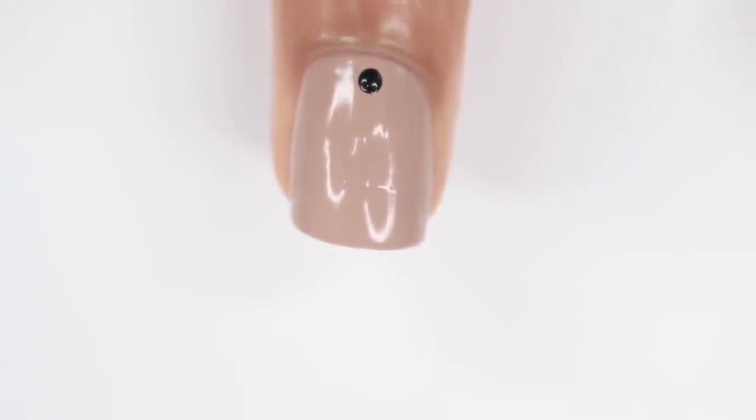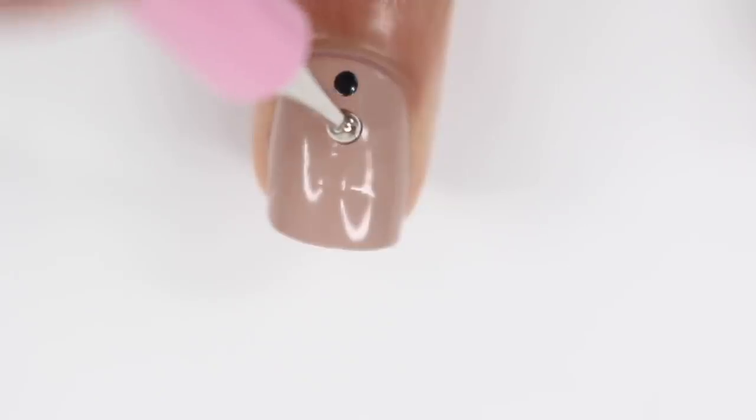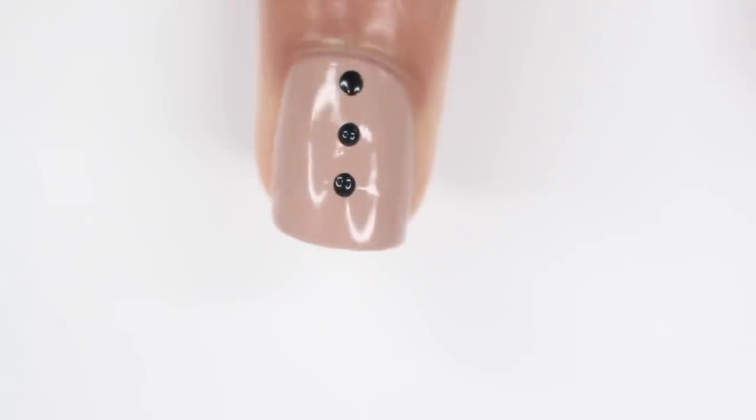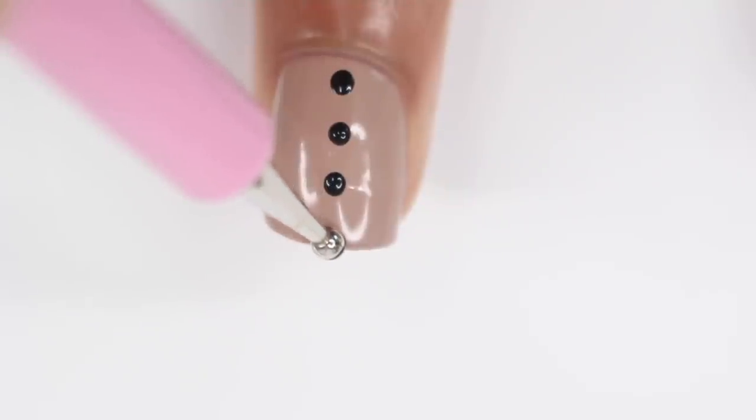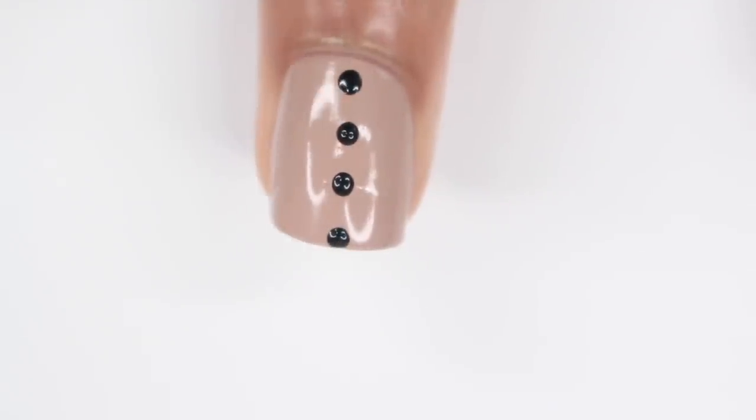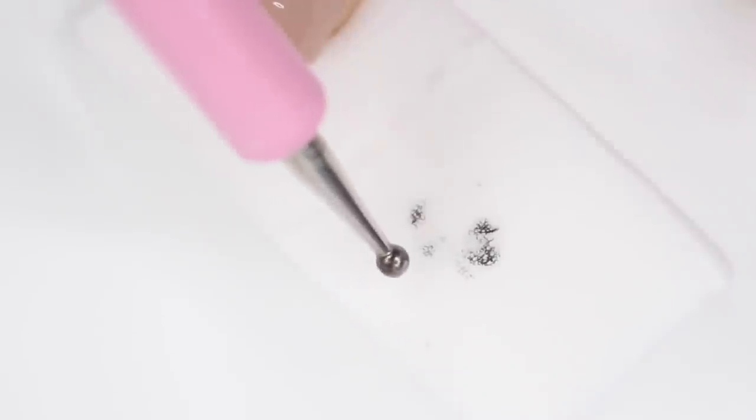I'm going to do the classic polka dot nail where you do rows of dots to give you that polka dot print. For this you want to try to keep the dots around the same size. Honestly it's hard to get them all perfect but if they're close that'll be fine. After I do a few dots I typically wipe the dotting tool off on a makeup sponge. I do this because sometimes nail polish will start to dry onto the dotting tool and it'll be bumpy and won't give you a perfect dot. I'll do that or use some nail polish remover in the lid to clean off my dotting tool. Either way you want to make sure you're cleaning it off as you go.